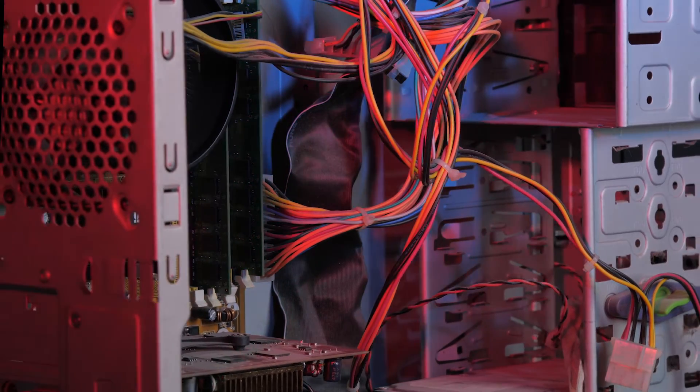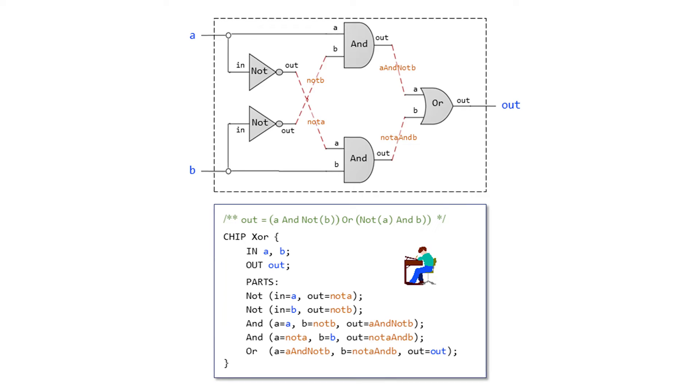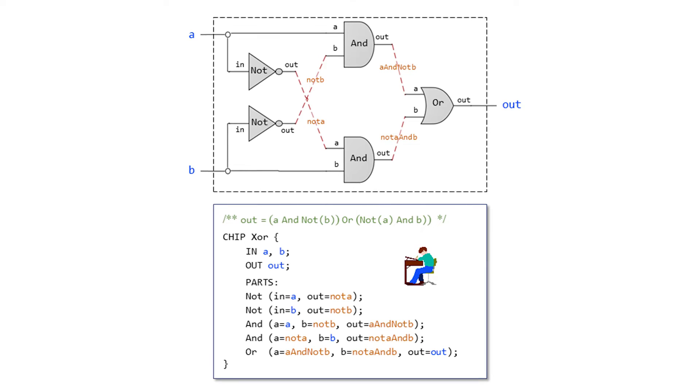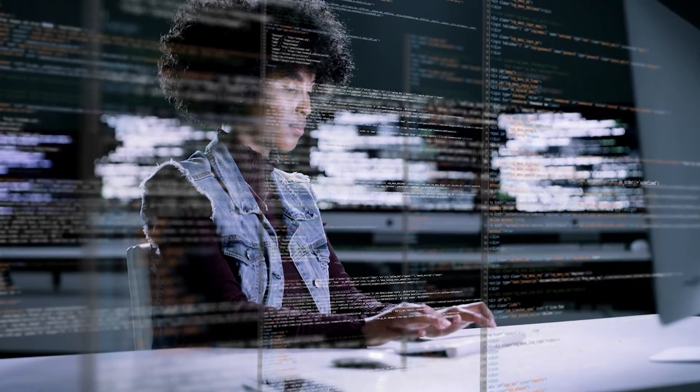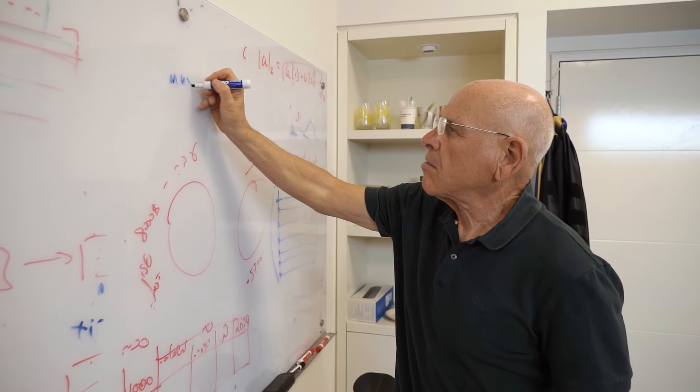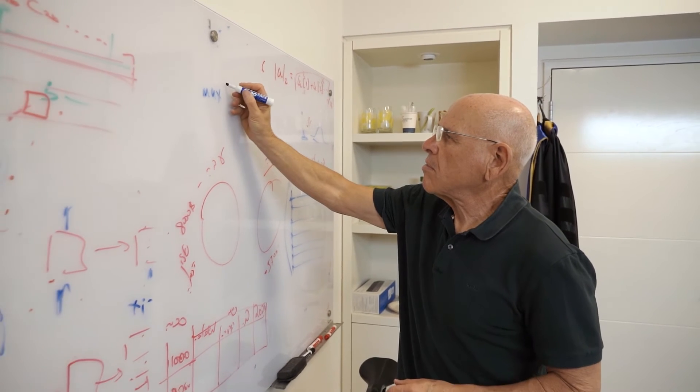In the first part of this journey, students build a CPU, a RAM, and a computer architecture using a hardware description language that we teach in the course. The resulting computer is simulated on the students' PCs and can also be built in FPGA. This part of the course can be done without any prerequisites, because we provide all the necessary knowledge in the course itself.